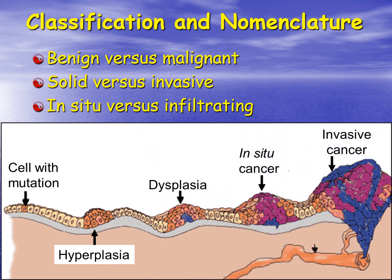In situ versus infiltrating: in situ simply means it is within an area, and we use this primarily for skin or epithelial cancers. A single cell develops mutations that cause it to become cancerous. That cell undergoes hyperplasia and tends to grow rapidly, eventually becoming dysplastic. We'll see different variations of these cancer cells. At this point, it has not crossed the basement membrane, so as long as it has not crossed this basement membrane, we call this cancer in situ.